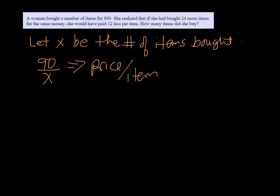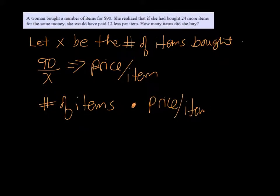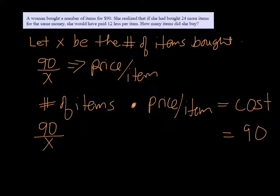So the problem is saying that she could have bought 24 more items and it still would have only been $90. So the cost is going to be the number of items times the price per item equals the cost, and we know the cost was $90. So the number of items that she got was $90 over X, and she could have gotten 24 more. So however many she bought, plus 24.